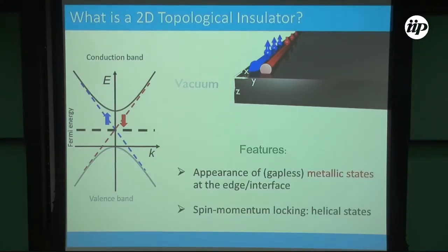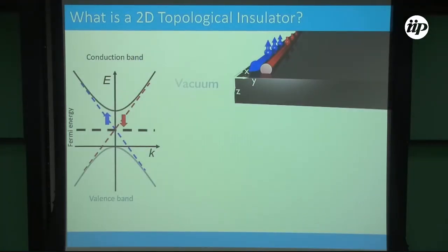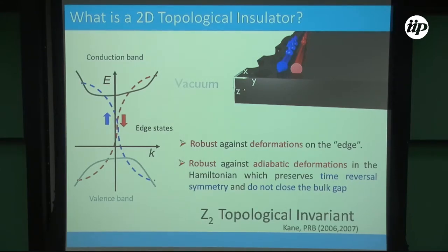This happens at the interface, and more importantly, they have spin-momentum locking. For instance, this red curve describes an electron with spin down and it's non-degenerate. The other one moving the other way — the group velocity is the derivative of this curve — describes an electron with spin up moving the other way. They lie on top of each other in real space, have different spins, and cannot scatter from one another. It's topological in the sense that you can produce changes in the Hamiltonian due to defects or imperfection along this direction, and these states will not be destroyed. You cannot get rid of those states.